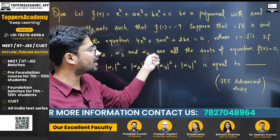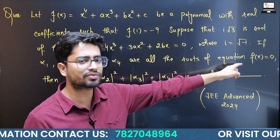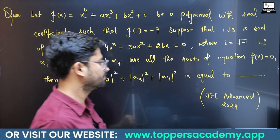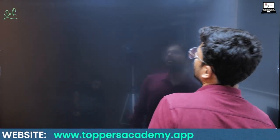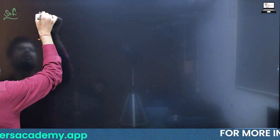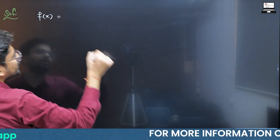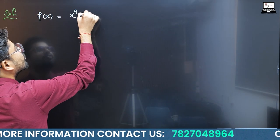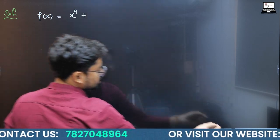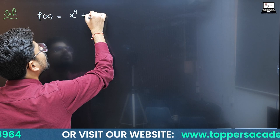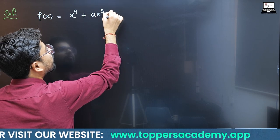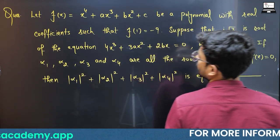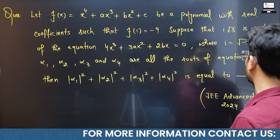If alpha 1, alpha 2, alpha 3, alpha 4 are the roots of the equation f(x) = 0, then you have to find the value of a particular expression. So f(x) is x⁴ + ax³ + bx² + c.